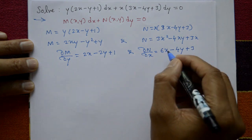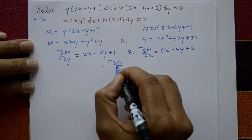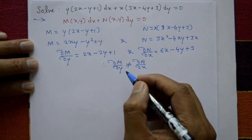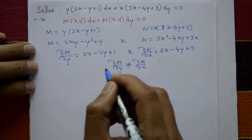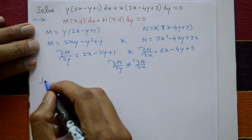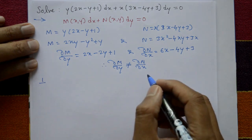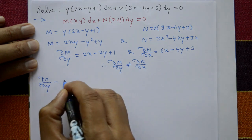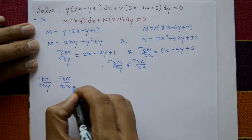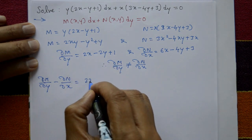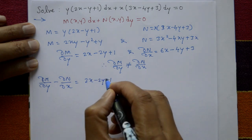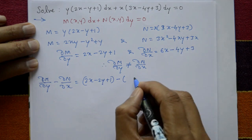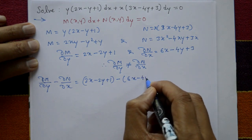Since ∂M/∂y is not equal to ∂N/∂x, the equation is not exact. Now find the difference: ∂M/∂y - ∂N/∂x = (2x - 2y + 1) - (6x - 4y + 3).